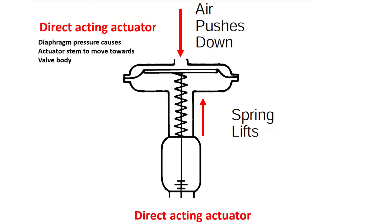In a direct acting actuator, the air pushes the diaphragm and that force is higher than the spring. The air pushes down the diaphragm, the diaphragm in turn pushes the spring, and the spring moves the actuator stem towards the valve body — that is, the actuator stem or plug moves towards the valve body. This is called a direct acting actuator.